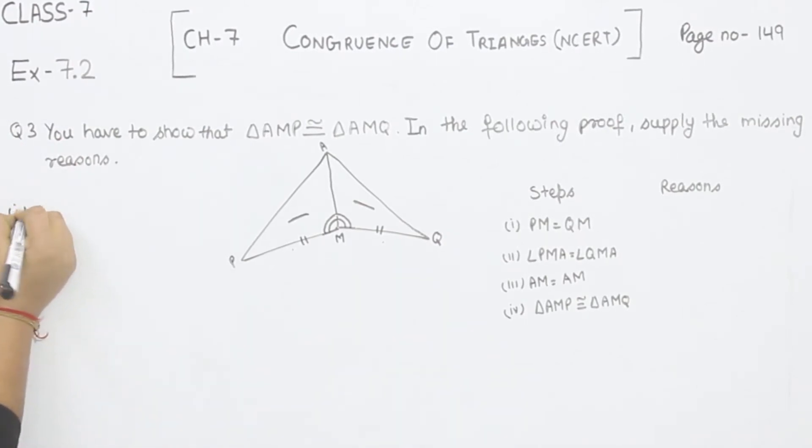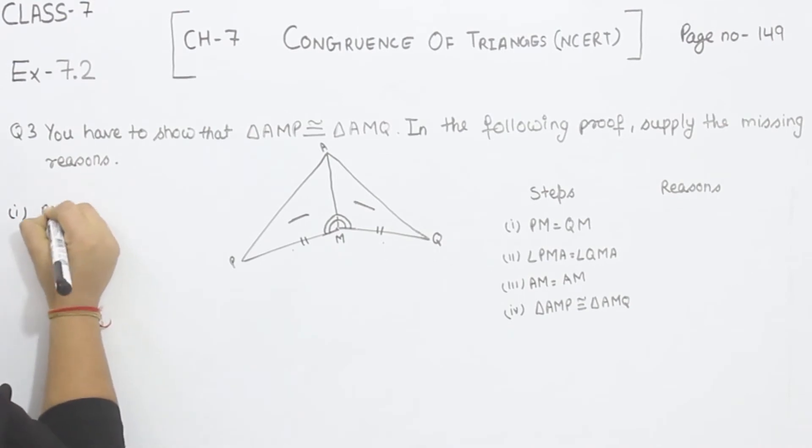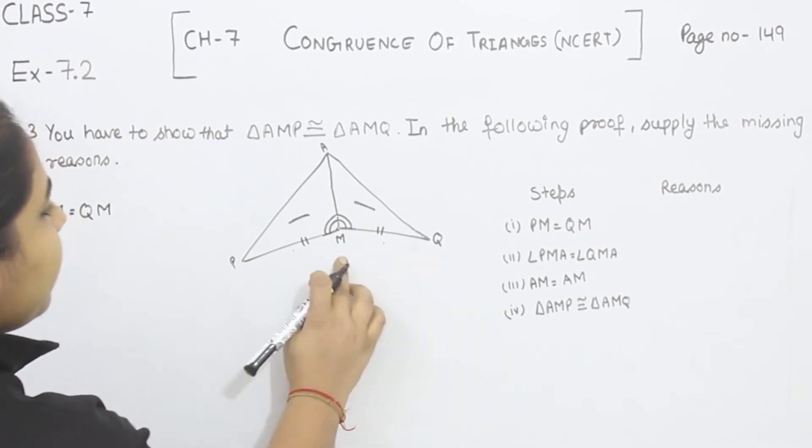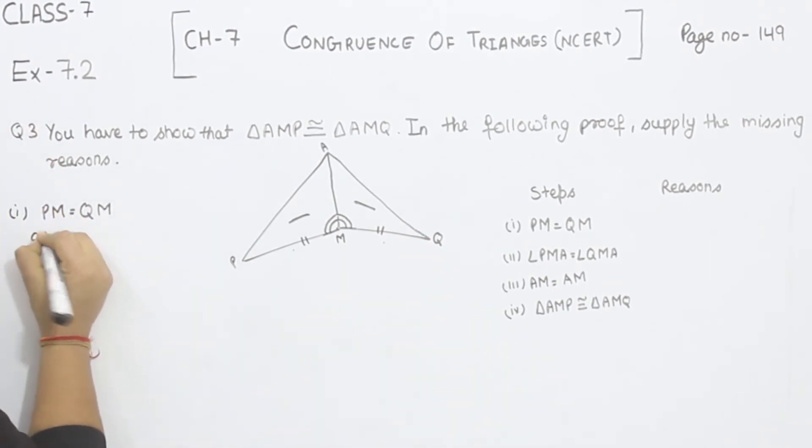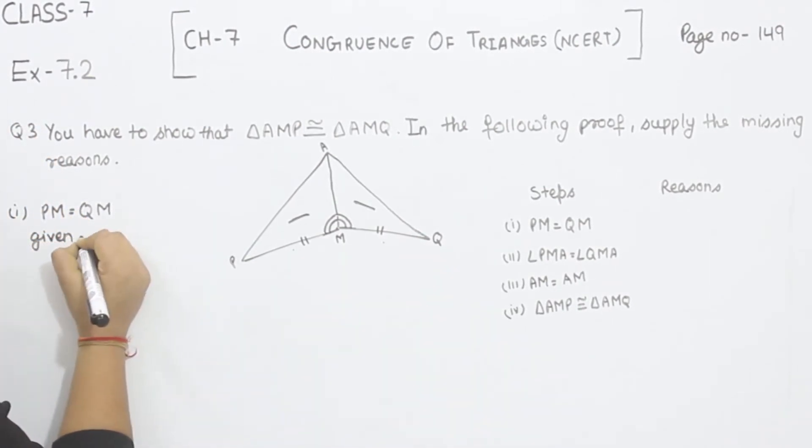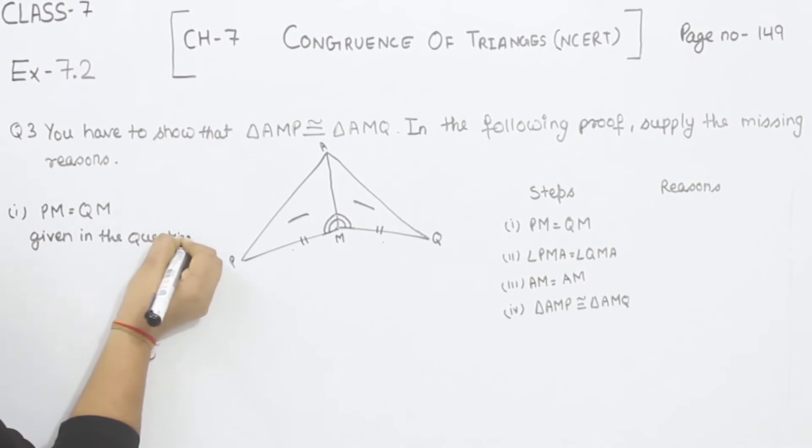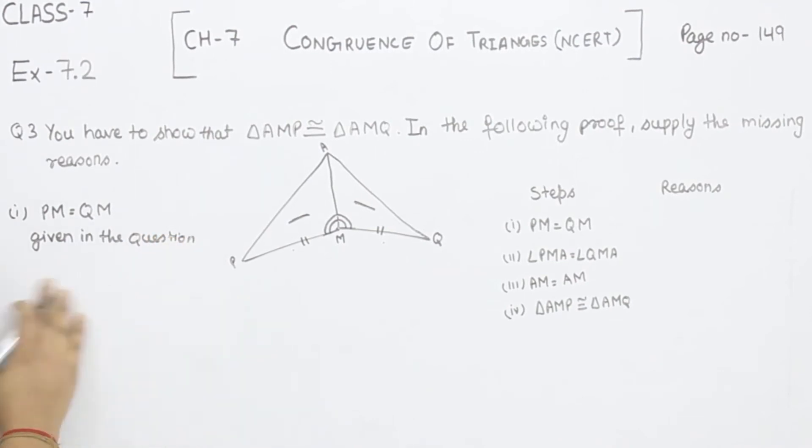So start with part 1. In part 1, PM is equal to QM. This one is given to us, so we are going to write here, given in the question.